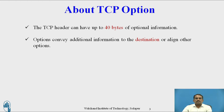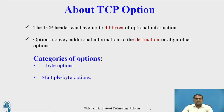Options convey additional information to the destination or align other options to the user. There are two categories of options: the first is a one-byte option, and the second is a multi-byte option. Let us see each one in detail.